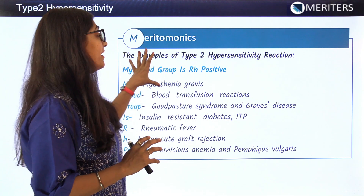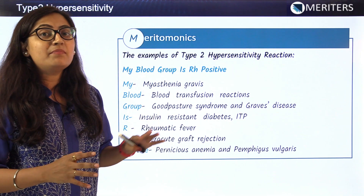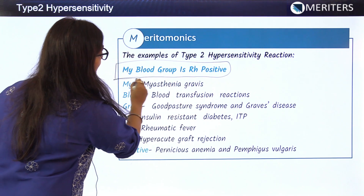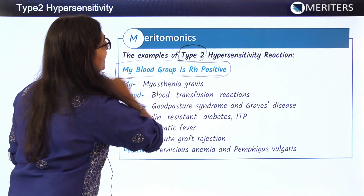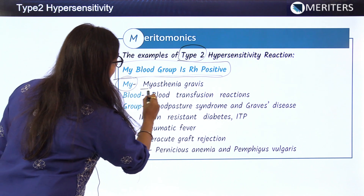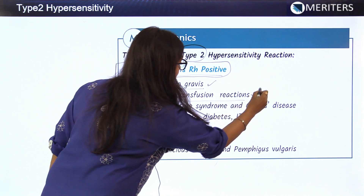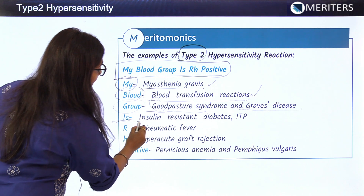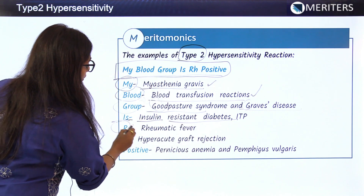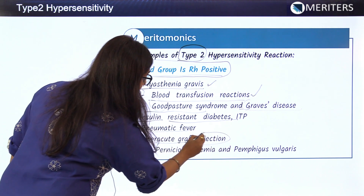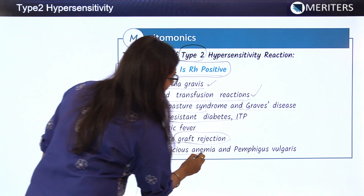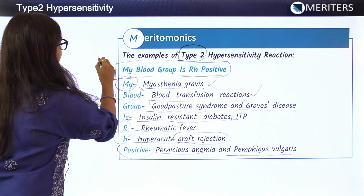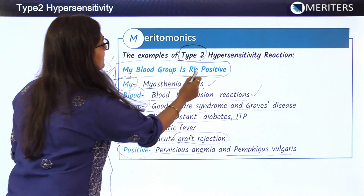A mnemonic to remember type 2 hypersensitivity examples: 'My blood group is Rh positive.' M = Myasthenia gravis; Blood = Blood transfusion reactions; Group = Goodpasture syndrome and Graves' disease; I = Insulin-resistant diabetes; R = Rheumatic fever; H = Hyper-acute graft rejection; Positive = Pernicious anemia and Pemphigus vulgaris.